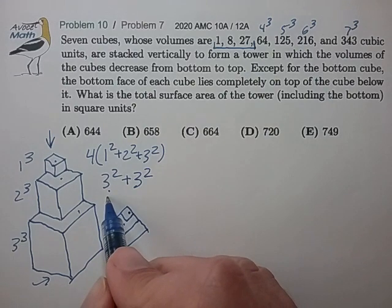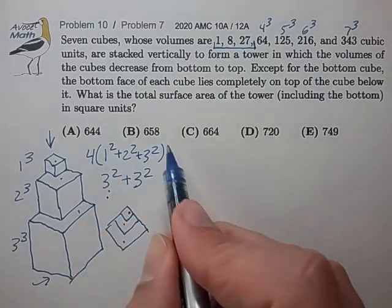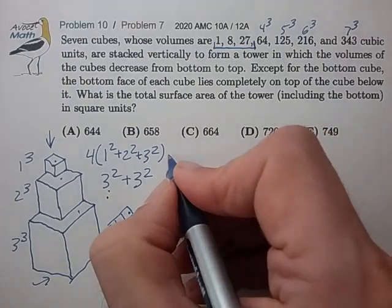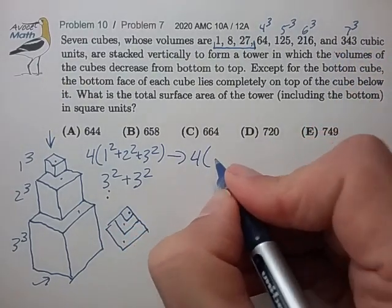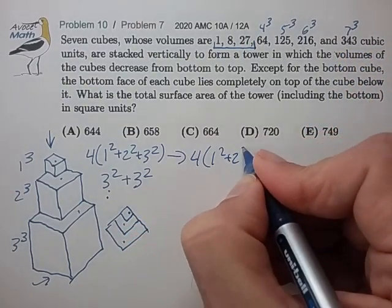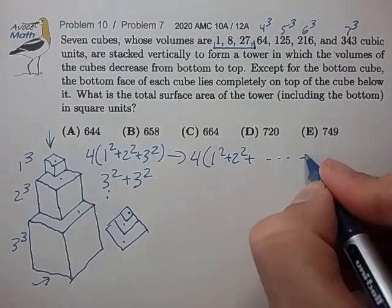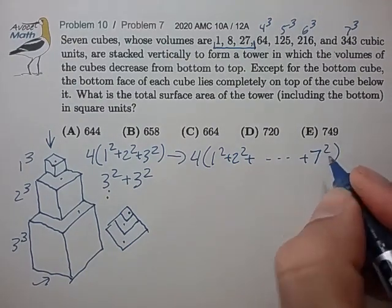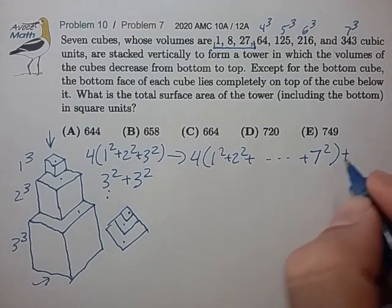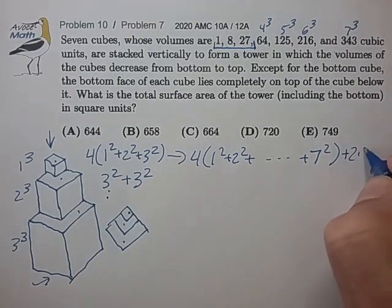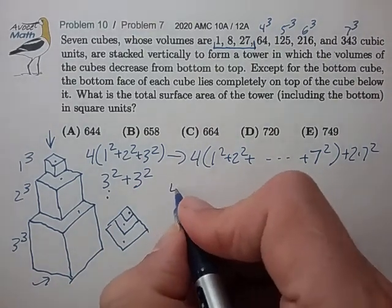So that looks pretty convincing. And the structure is such that I think we know how to extend this now to the full problem. We have to take 4 times 1 squared plus 2 squared all the way out to 7 squared plus 2 times 7 squared. So let's work that out.